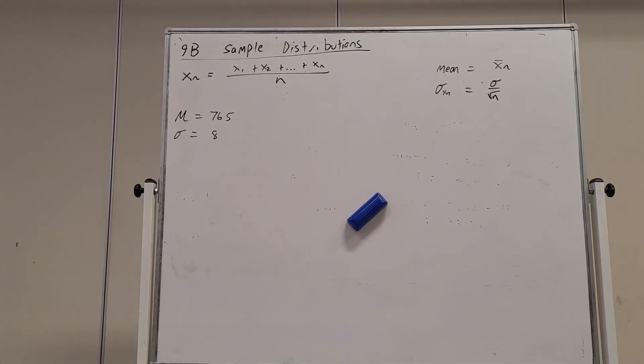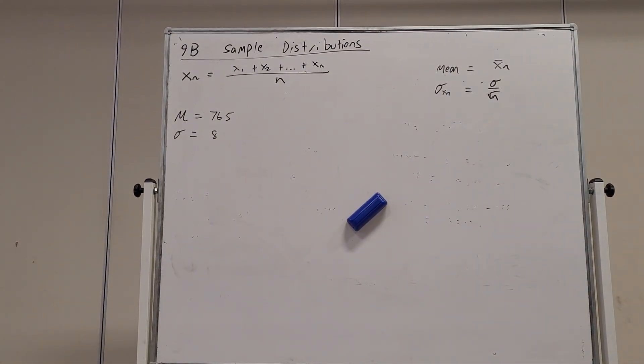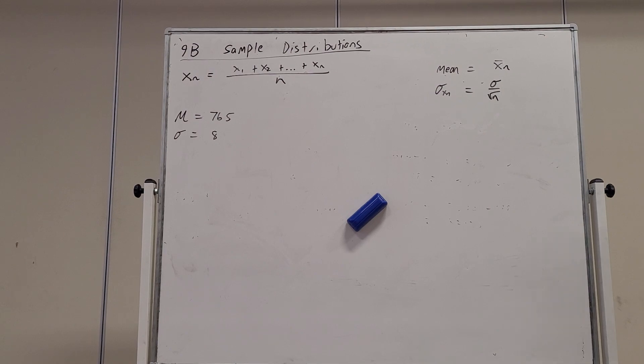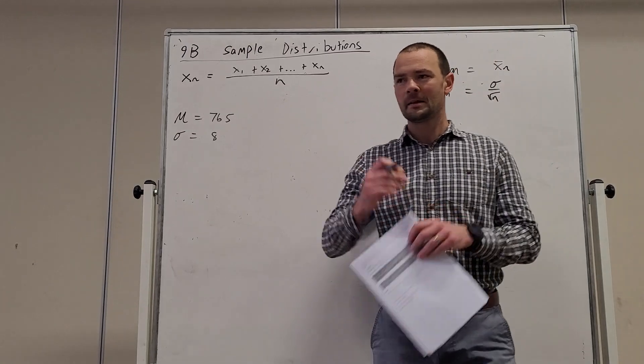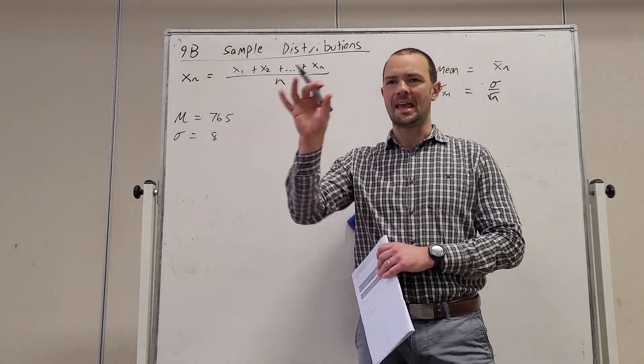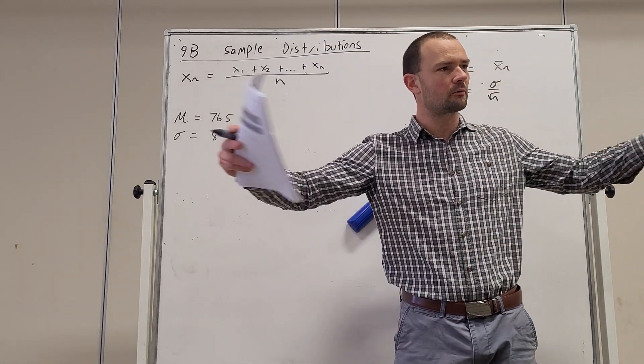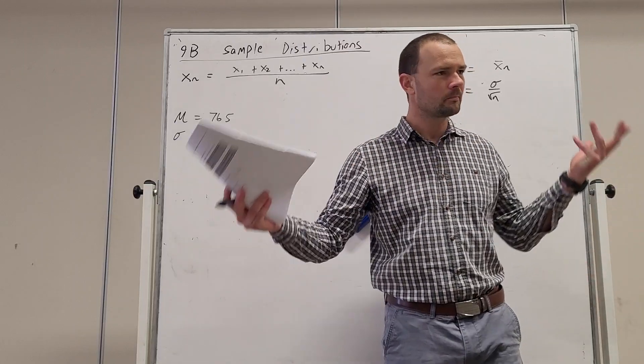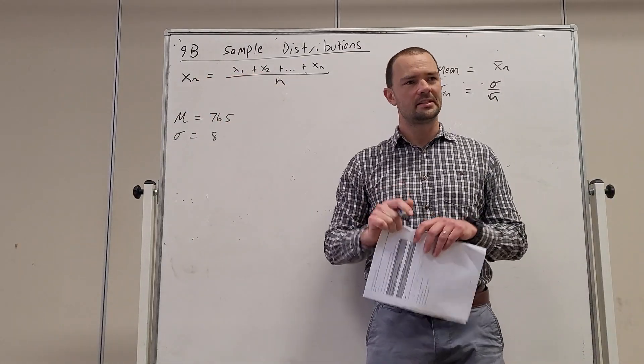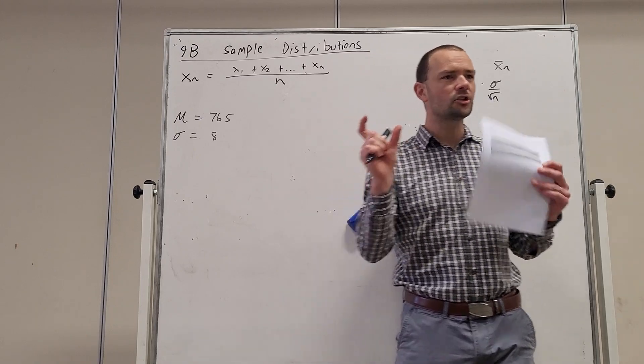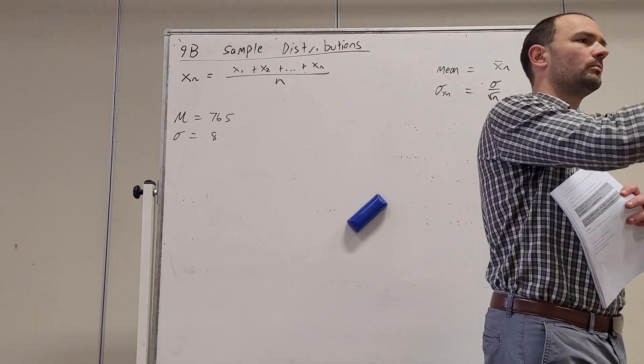Okay, we'll get started guys. Exercise 9b, we're talking about distributions of sample mean. This flows on from what we were talking about yesterday. Yesterday we had the distribution Sn, which arose when we add results together. Now we're talking about the distribution Xn, which is the average of the sum of those distributions.